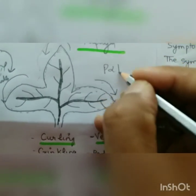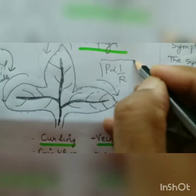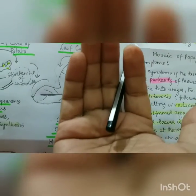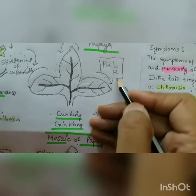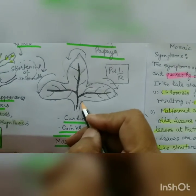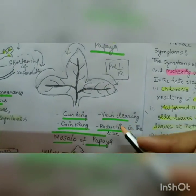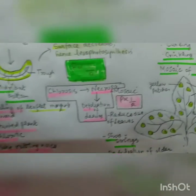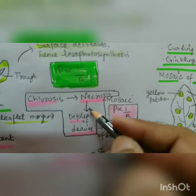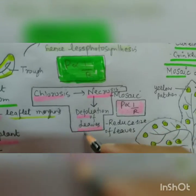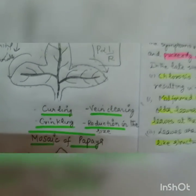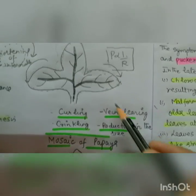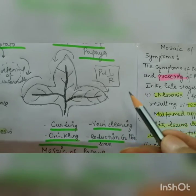Photosynthesis is inversely proportional to respiration. When there is a curling of leaf, the photosynthetic area decreases, hence photosynthesis decreases and respiration increases. The food stored is consumed, and first chlorosis will come, then necrosis, followed by defoliation of the leaves. Because the set pattern is: chlorosis is followed by necrosis, then defoliation because of reduced photosynthesis and increased respiration, and ultimately the death of the plant. When there is a deficit of energy due to curling, vein clearing, and reduction in size, the plant fails to flower.